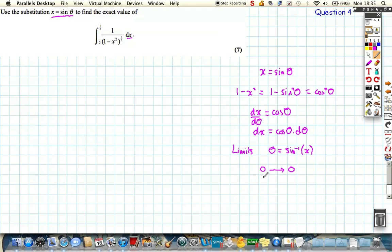And our limit of a half in x, putting it into here and using our calculator, comes out in radians, and theta is pi of 6.